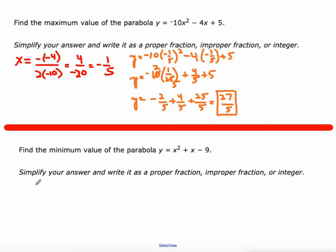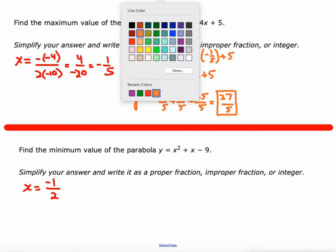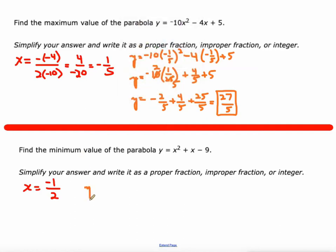Alright, let's do it again. This time x equals negative b. b is 1 so negative 1 over 2 times a. a is 1 so 2. So there's our x value. We're going to plug that value into the equation. y equals negative 1 half squared plus negative 1 half minus 9.